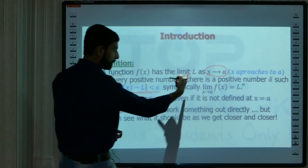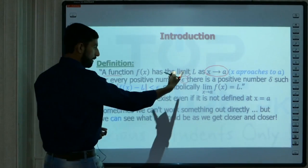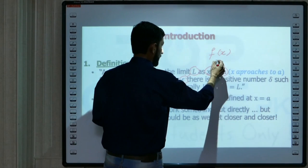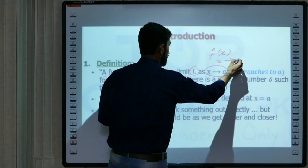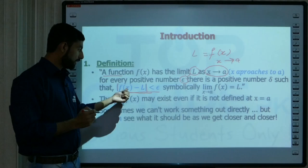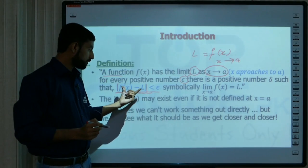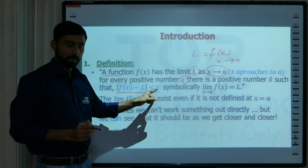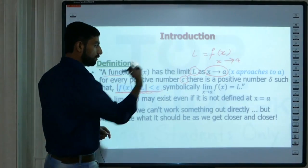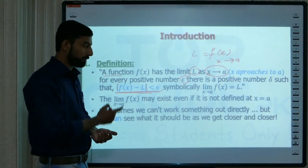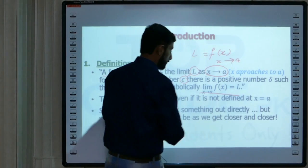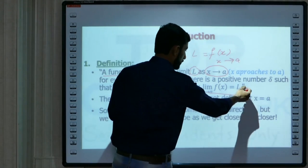Yeh condition kya hai? Ke aap function mein se agar yeh apni limit L — jab aap function ke upar limit L hai — yeh asal mein f(x) as x approaches to a hai. Jab aap is ko calculate kar lenge, woh L ke equal aa jaaye ga. Toh agar aap f(x) ko x pe evaluate karein, is mein se L minus kar dein, to us ka jo magnitude hai woh less than epsilon aaye ga. Hum is ko likhte hain: limit of f(x) as x approaches to a is equal to L.